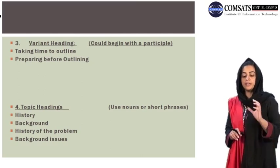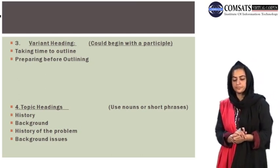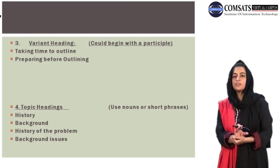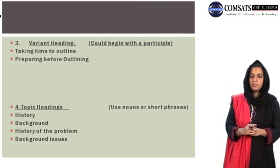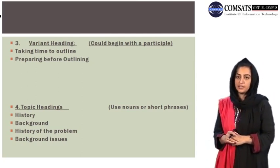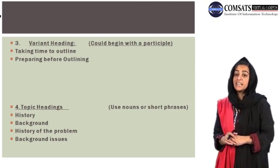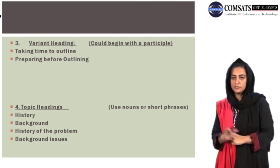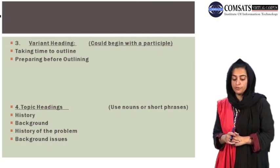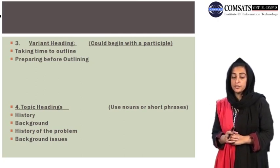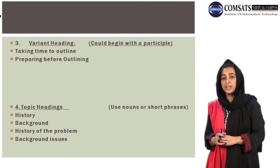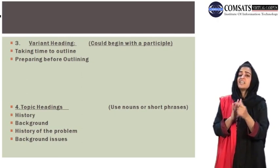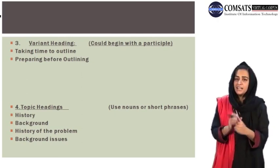The last type is variant headings — those beginning with a participle using '-ing.' For example, in imperative it was 'Take time to outline,' but in variant it becomes 'Taking time to outline,' or 'Preparing before outlining.' So the four types are: topic headings, complete sentence headings, imperative headings, and variant headings.